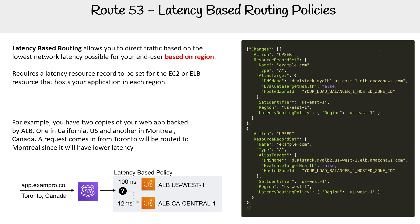Let's get the pen tool out and take a look at this, because these records look very similar. We have one on example.com and another on example.com — they're both A records, but the key difference is that you have to provide a set identifier. When you have two records with the same name and the same type, you need this identifier, so we're naming them based on the region they're in to distinguish them.